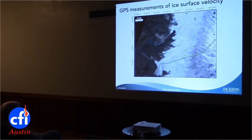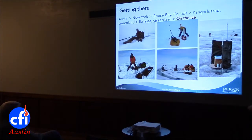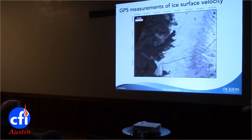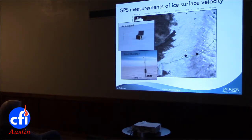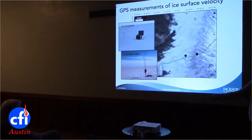In 2011, we put out 11 GPS stations on the ice and one base station. The problem with these stations is you might leave one looking a certain way, and come back three months later and find that because of so much ablation — so much melting of the ice — the antenna is well above your head when you return.